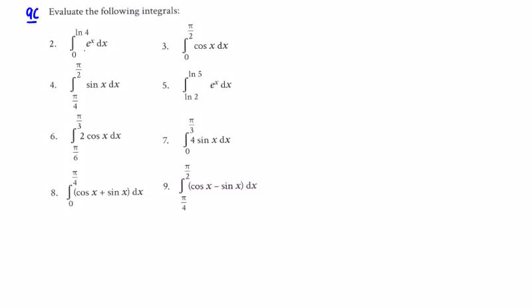Problem 9c: we're looking at the integral of e to the power of x dx. e to the power of x integrates to e to the power of x, evaluated between the natural log of 4 and 0. So we have e to the power of the natural log of 4, which equals 4, minus e to the power of 0, which is 1. This gives 3.